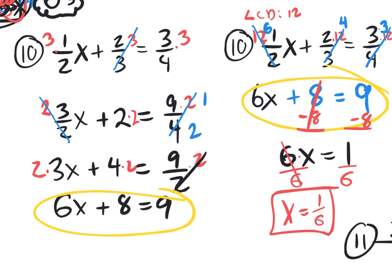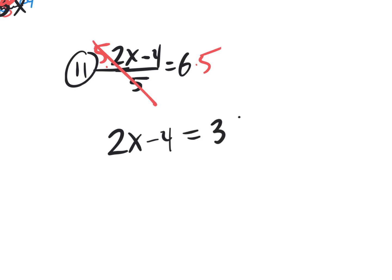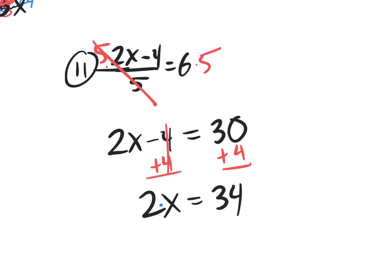Let me bring up the last one, number 11. That one is a piece of cake compared to all the rest. How do I get rid of the fraction? Multiply by 5. Put times 5, which will cancel out, and then times 5 on the other side. I have left 2x minus 4 equaling 6 times 5 which is 30. Add 4 to get rid of the minus 4 — what you do to one side, do to the other — ending up with 2x equaling 34. Divide by 2, giving us the final answer: x equals 17.